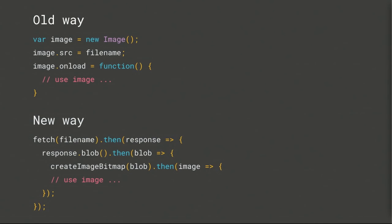Here's the old way of doing things — using the image interface and loading it, then using it once loaded. The new way is not a lot more complicated, just maybe an additional line of code. In this example we're using the Fetch API, though you could also use XHR. Once we have the blob, we call createImageBitmap. That function returns a promise, and the promise resolves once the image is completely decoded.